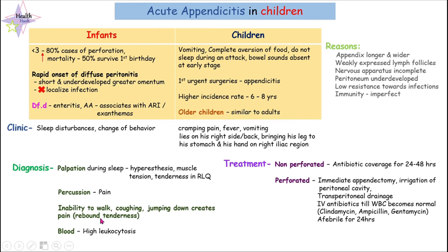Blood tests show high leukocytosis, and ultrasound can confirm the diagnosis. For treatment of non-perforated cases, we give antibiotic coverage for 48 hours. For perforated cases, we perform immediate appendectomy, irrigation of the peritoneal cavity with saline solution, transperitoneal drainage, and intravenous antibiotics until white blood cell count normalizes. Antibiotics used include clindamycin, ampicillin, and gentamicin. The patient should also be afebrile for 24 hours.